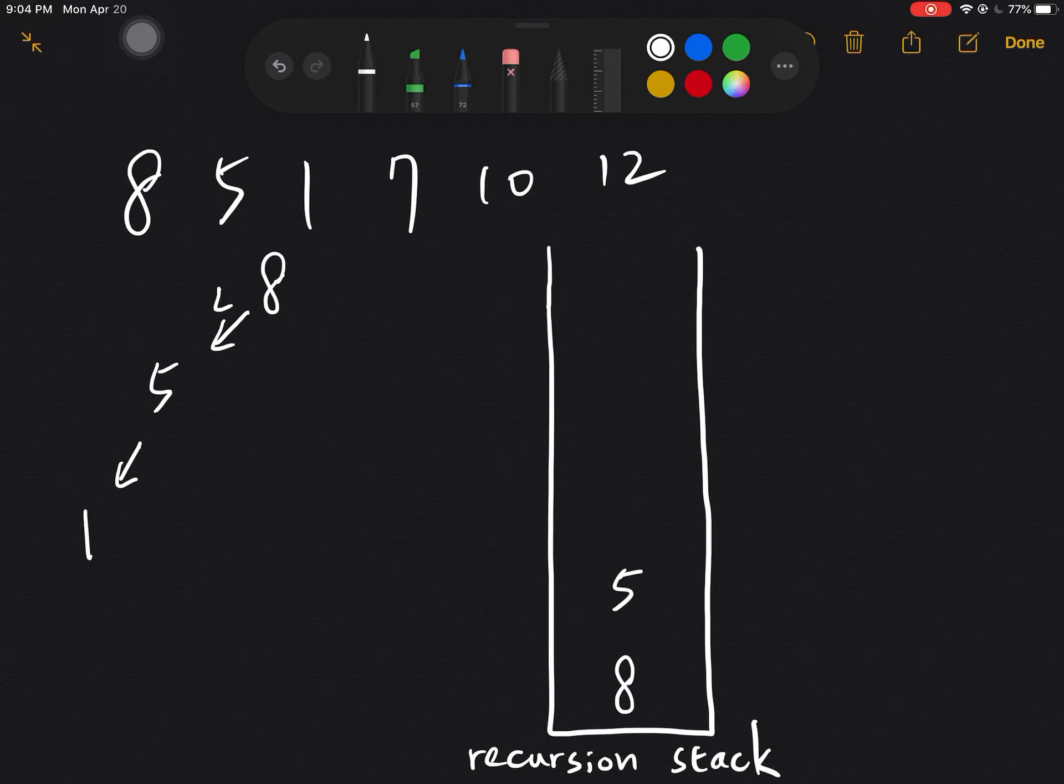And 1 will call its left but it's nothing, so simply one left will return null, so does the one right. And then after this, one will return and then be popped out.